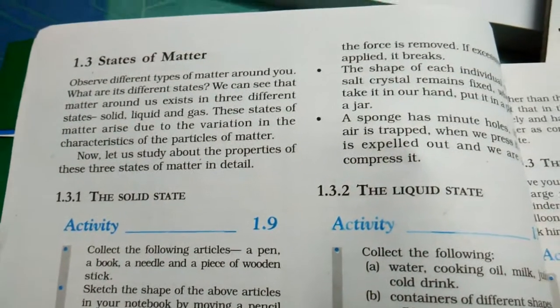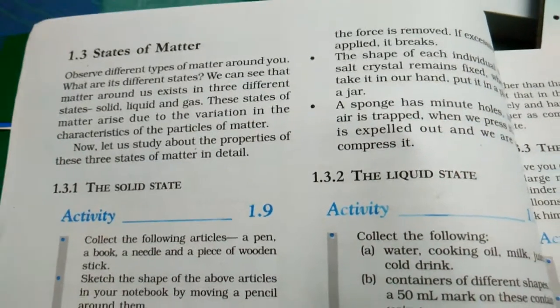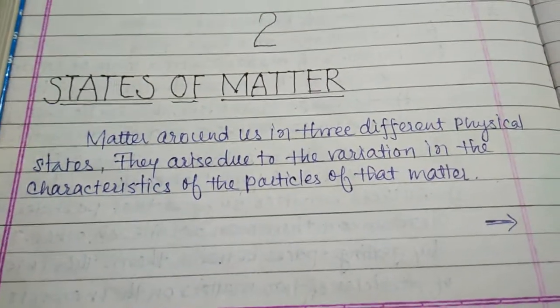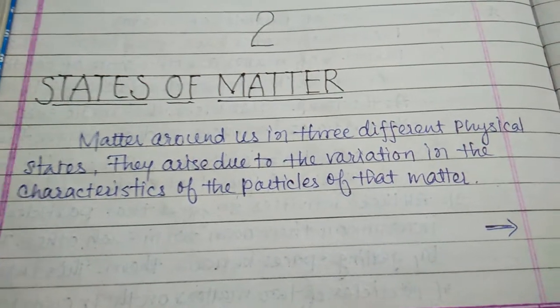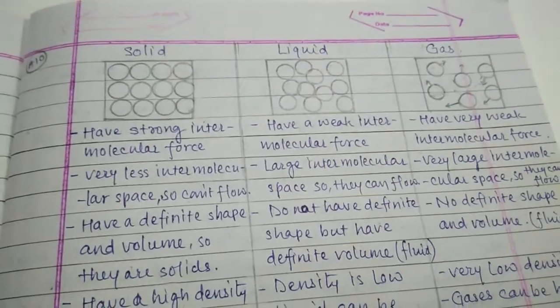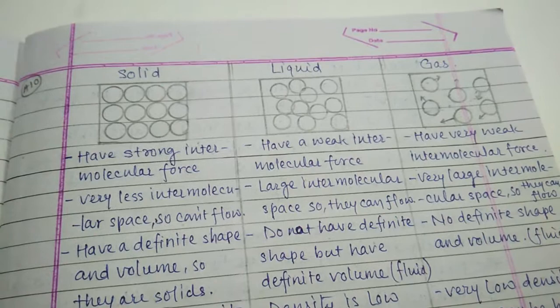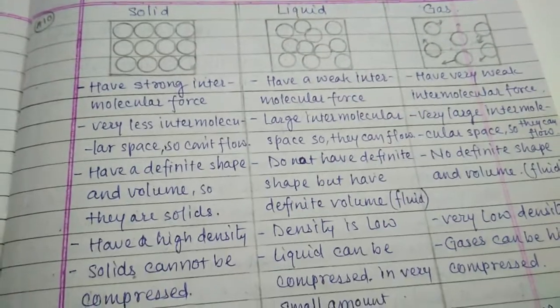Students, we are discussing the states of matter today. We know that matter around us exists in three different physical states. They arise due to variation in the characteristics of the particles of matter. There are three states of matter according to their physical nature: solid, liquid, or gaseous.